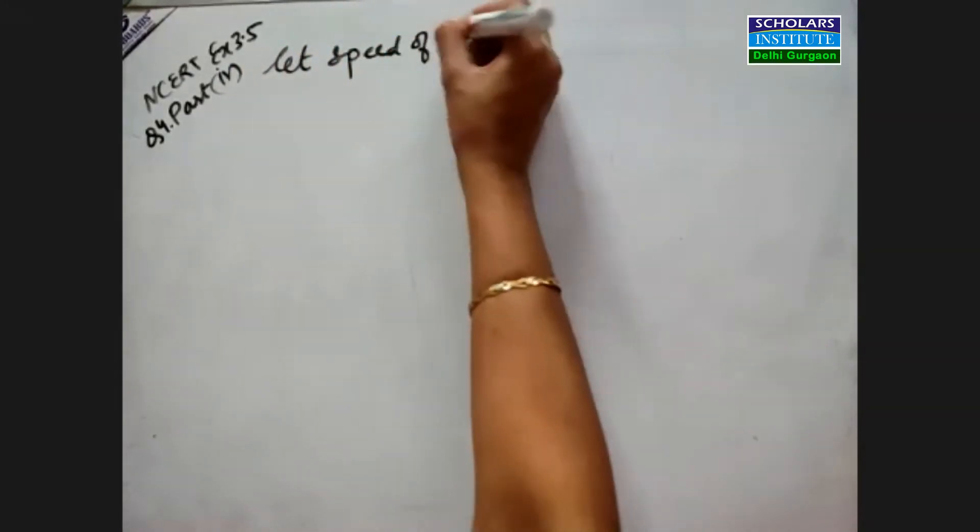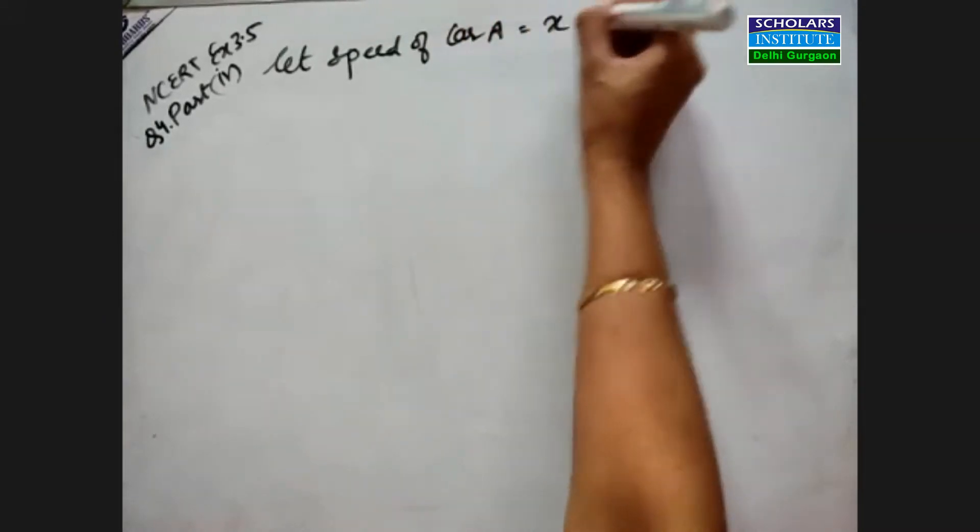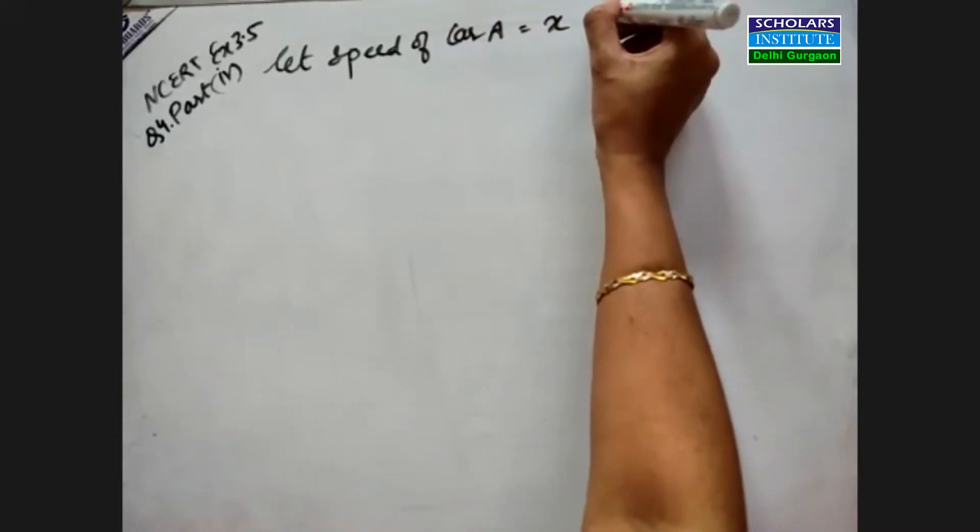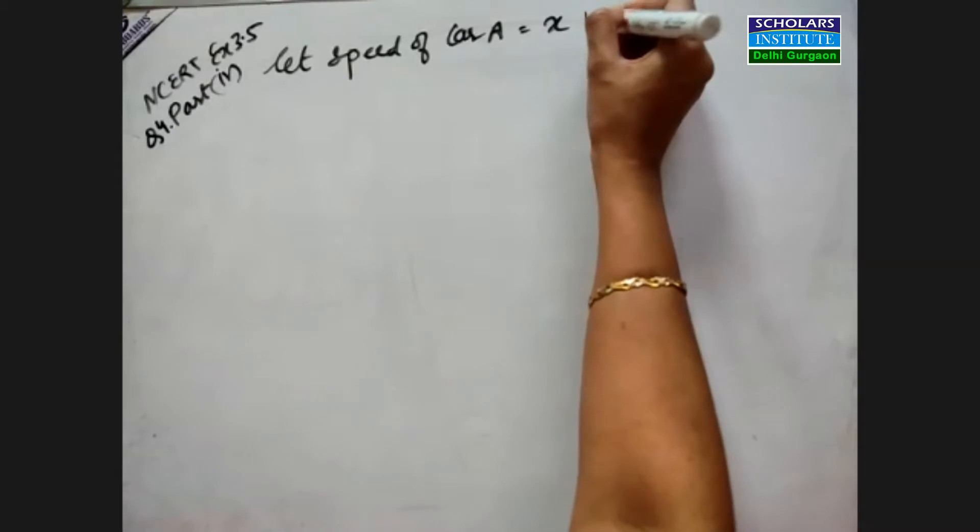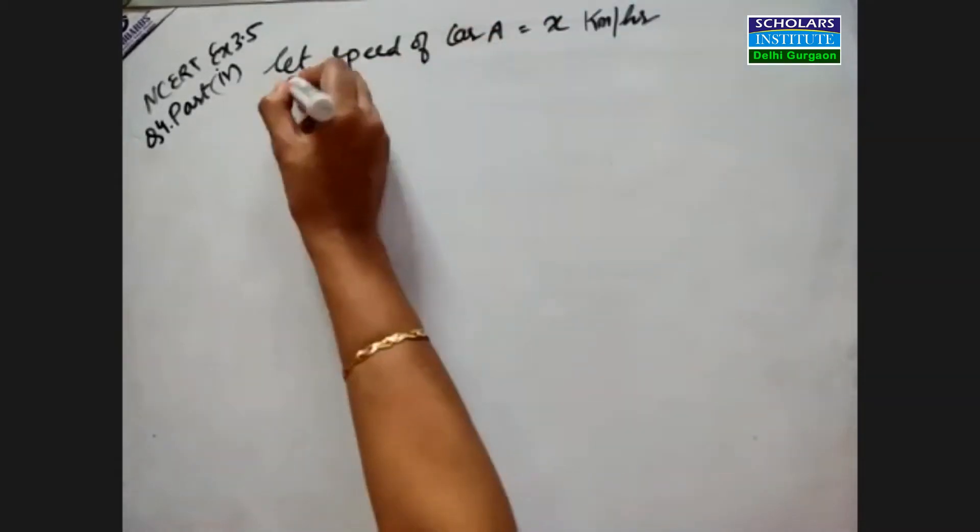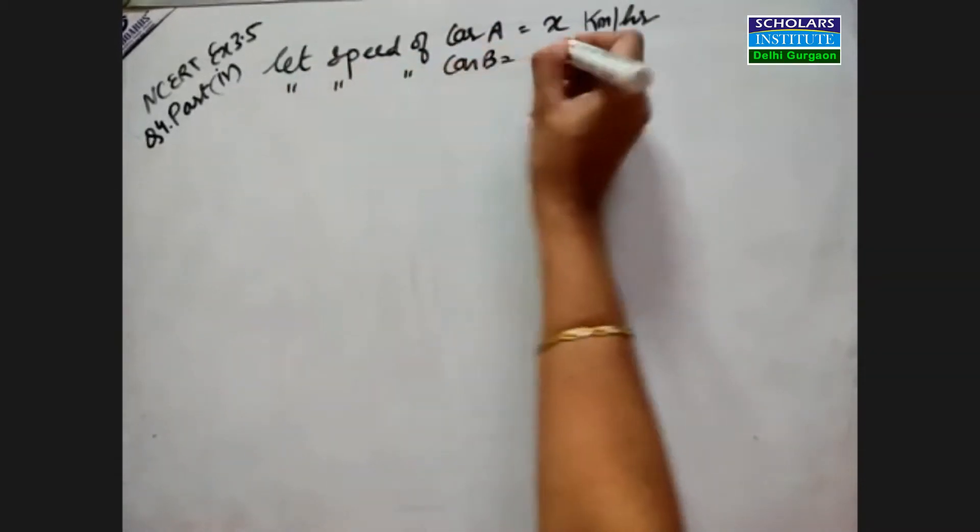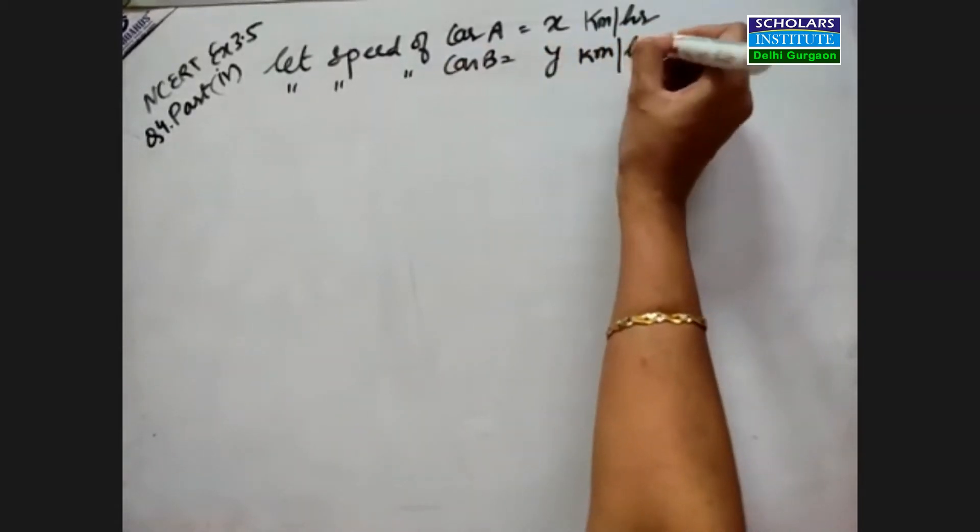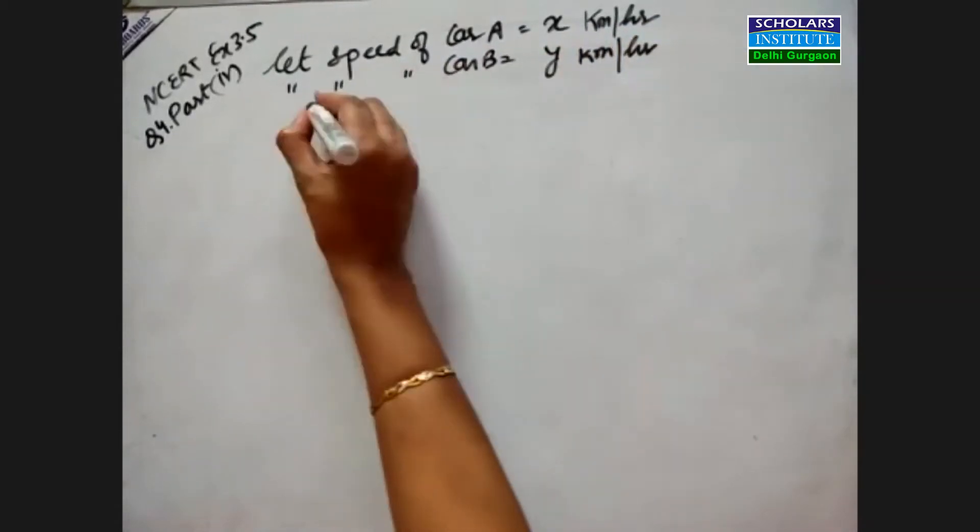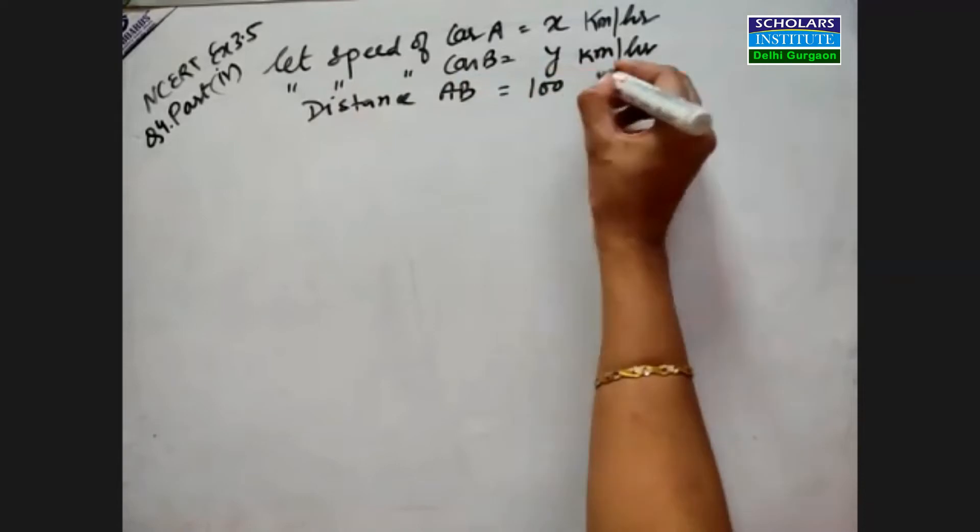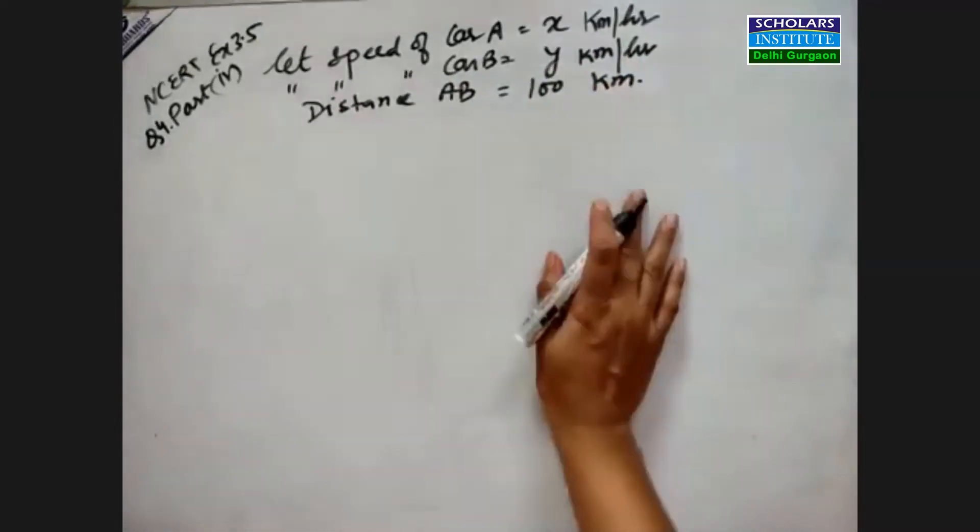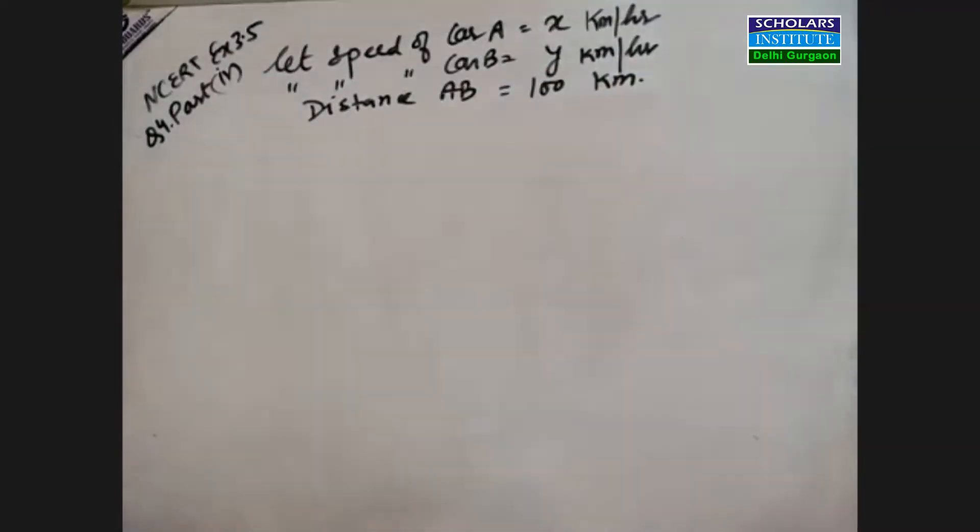Let the speed of car A be x kilometers per hour and the speed of car B be y kilometers per hour. It's an important question. We're given that the distance between A and B is 100 kilometers.